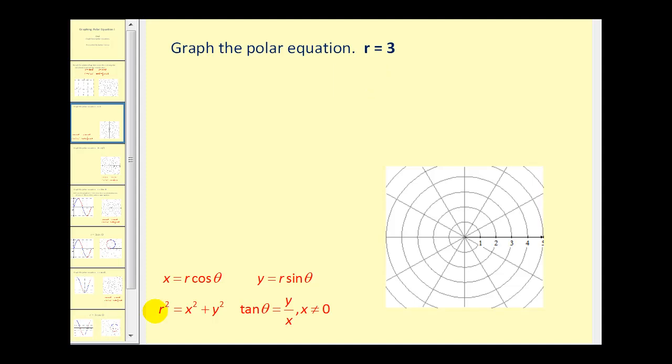One way would be to recognize that r squared is equal to x squared plus y squared. So if we squared both sides of this equation, we would have r squared equals nine, and then we could replace r squared with x squared plus y squared. So now we have a rectangular equation where this is a circle where the center is at zero, zero, and we have radius three.